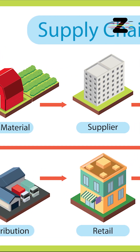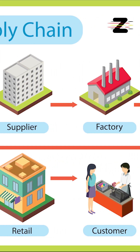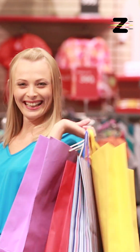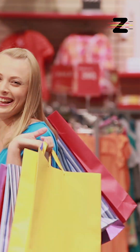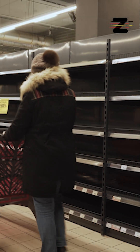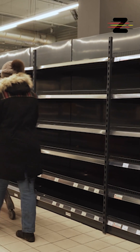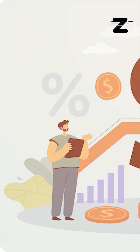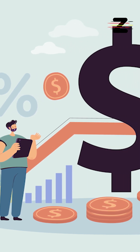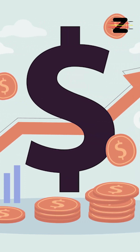As this information moves up the supply chain, each participant overreacts to the small increases in demand, resulting in too much inventory in some places and not enough in others. This can lead to inefficiencies and higher costs for everyone involved in the supply chain.